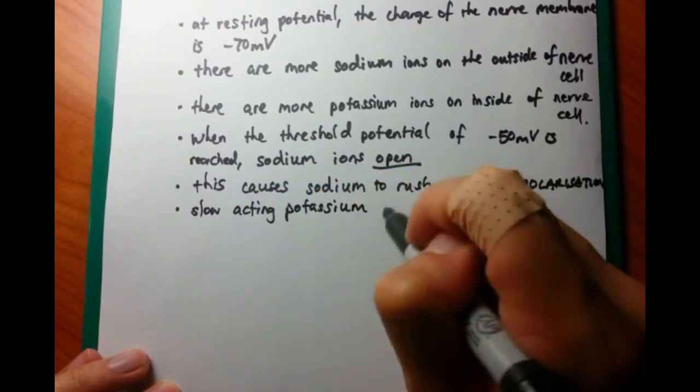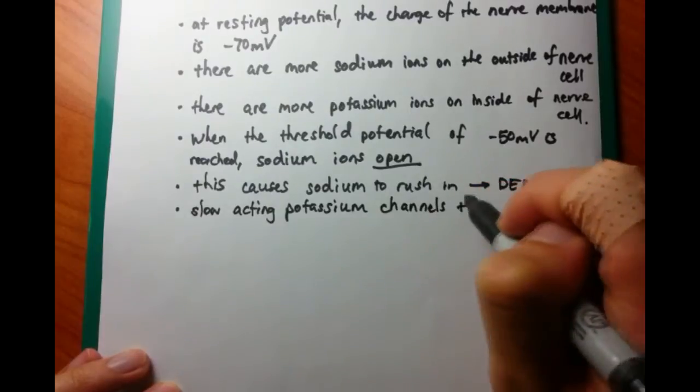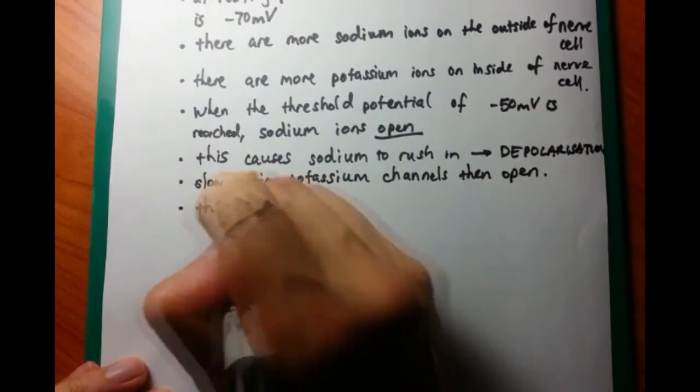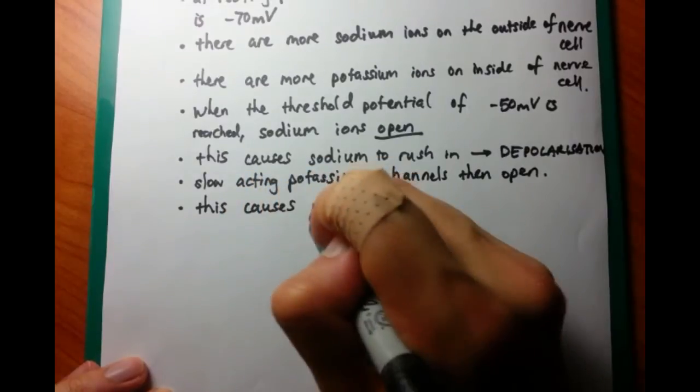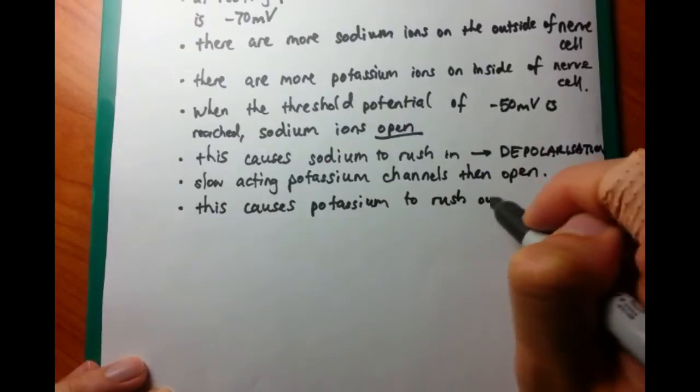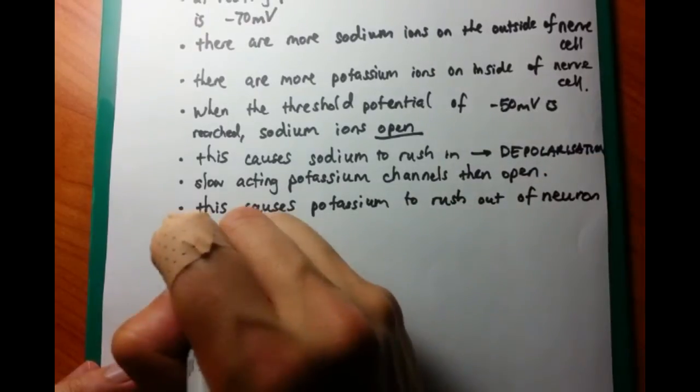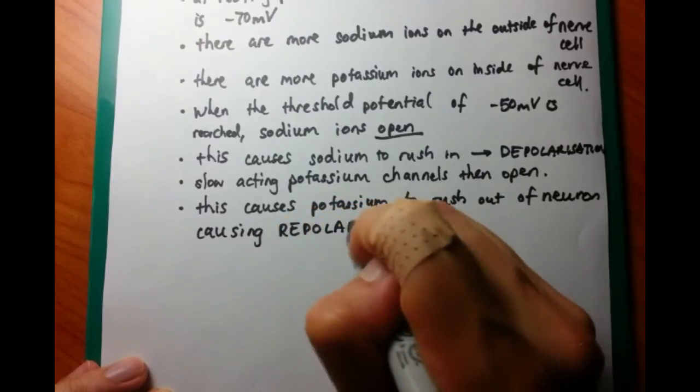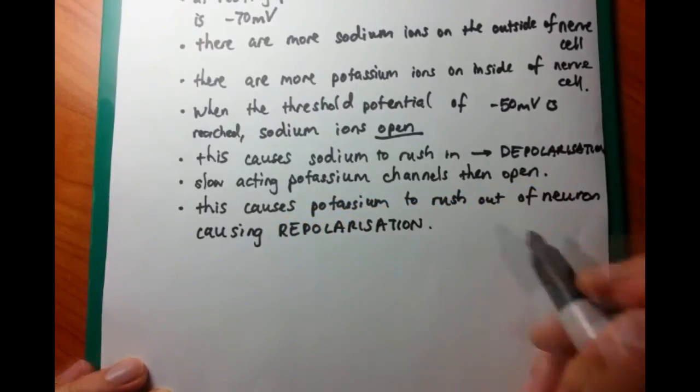After the sodium ion channels open, then potassium channels open. And what this does is that this causes potassium to go from its normal resting spot, which is inside the cell, and to come outside. So it goes from inside to outside. And then this causes what is called repolarization.